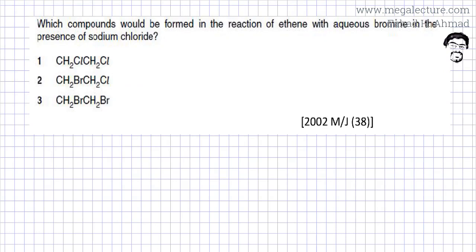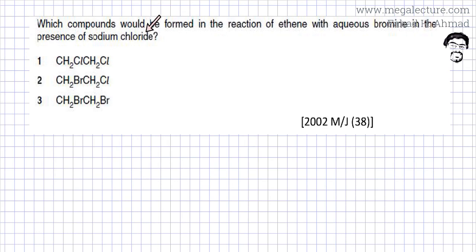The following question reads: which compounds would be formed in the reaction of ethene and aqueous bromine in the presence of sodium chloride? So, you have ethene reacting with aqueous bromine in the presence of NaCl.